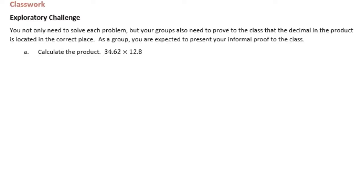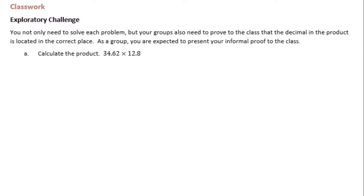We need to calculate the product and prove why the decimal point is in the correct place. I'm going to solve it the way we learned in fifth grade, using the standard algorithm. Thirty-four and sixty-two hundredths times twelve and eight tenths. I don't need to line up the decimal points when multiplying decimals, but I do need to remember that they're there. I'll worry about them at the very end.